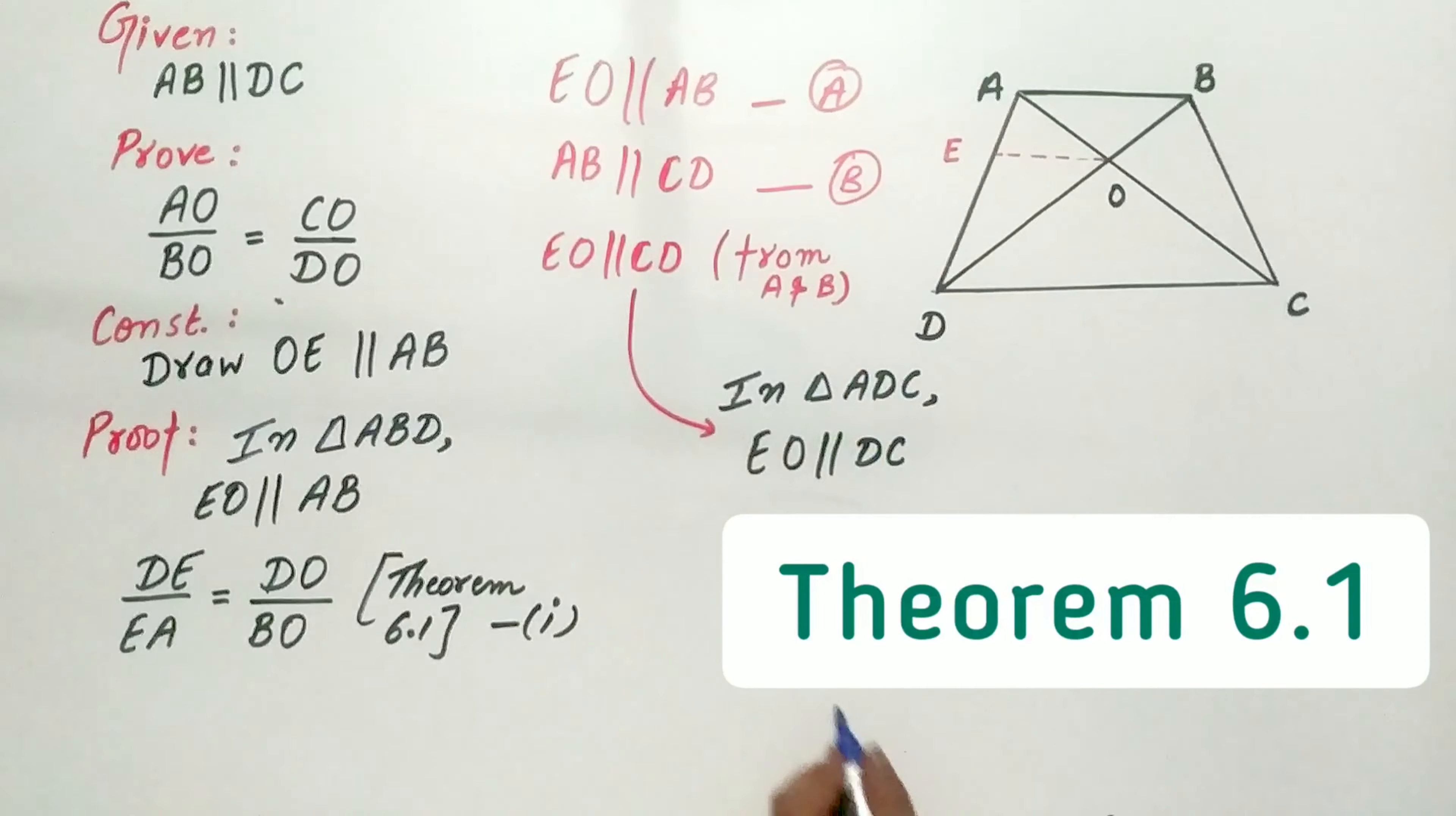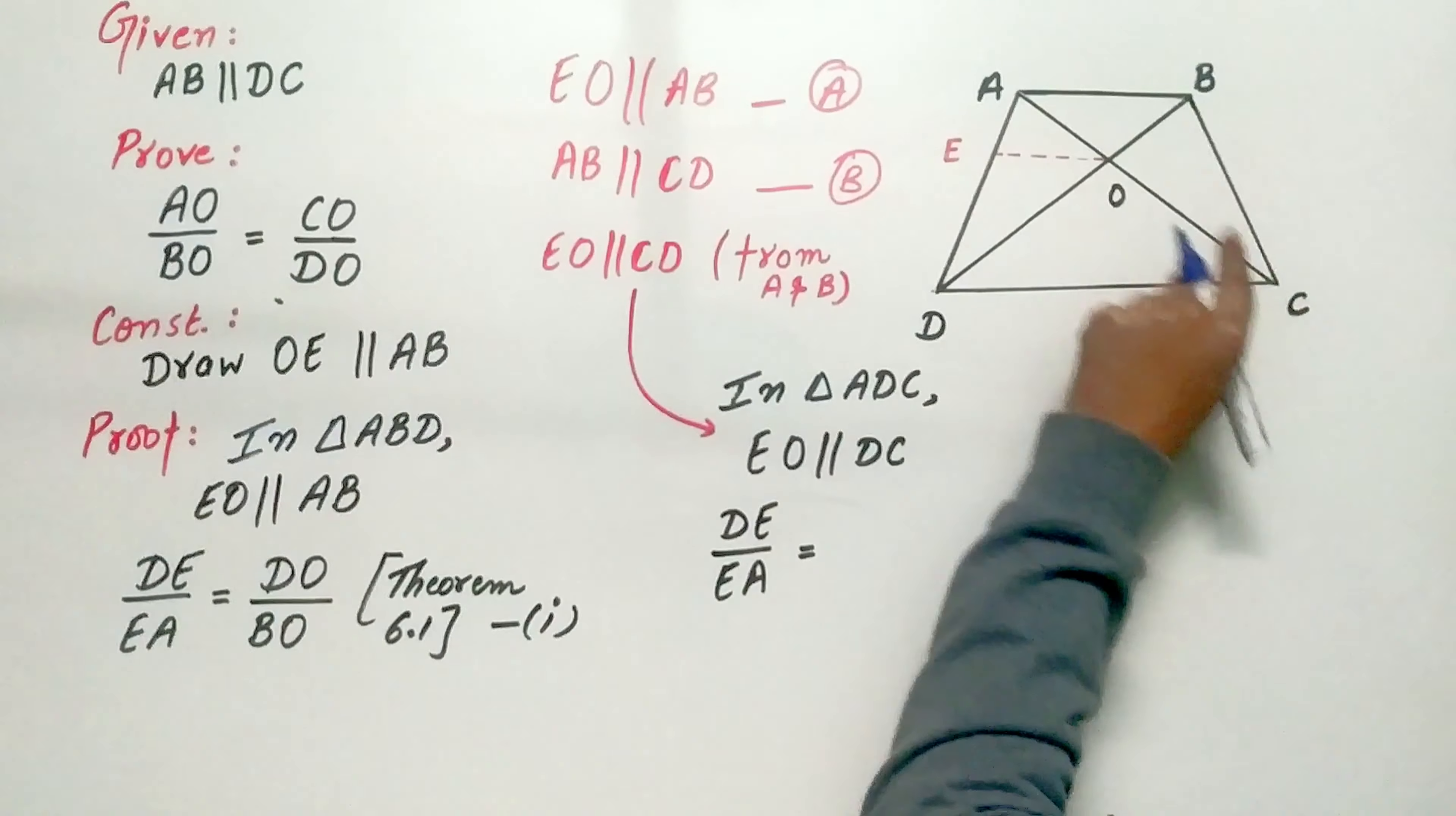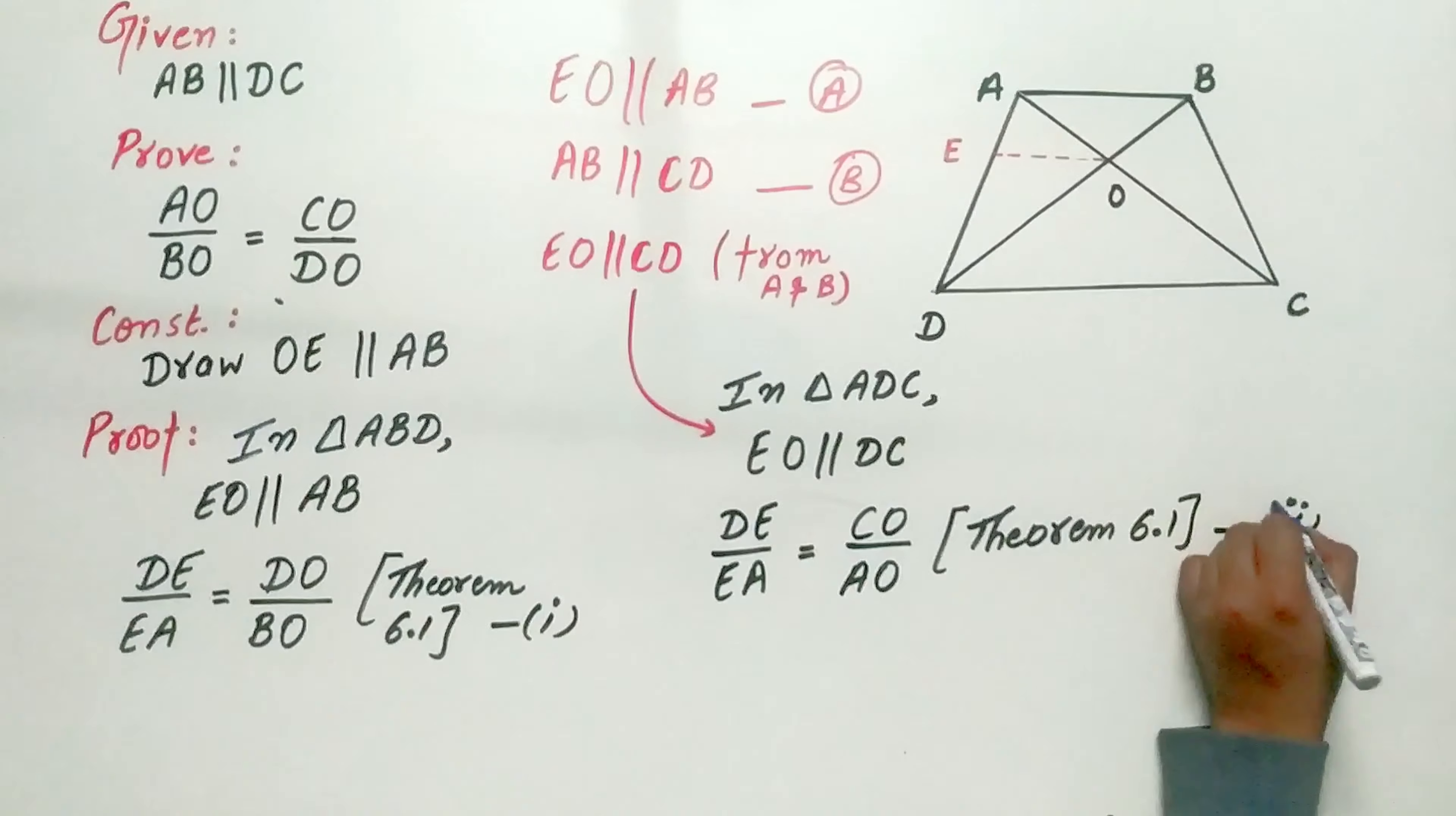DE by EA is equal to CO by OA. Again, by theorem 6.1 and mark it as second.